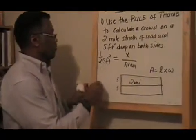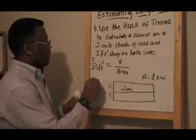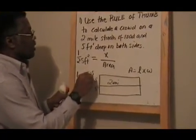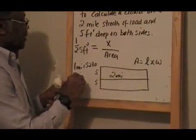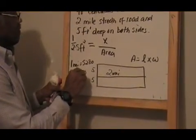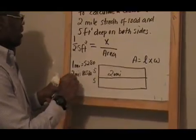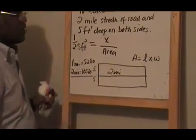So, if I convert two miles, one mile equals 5,280 feet. So, two miles equals 10,560 feet.